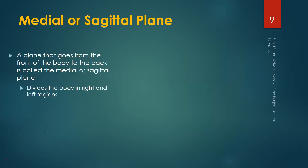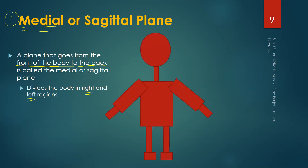The first plane we will discuss is called the medial plane; it has another name, the sagittal plane. Medial is a more meaningful word. A plane that goes from the front of the body to the back is called the medial or sagittal plane, and it divides the body into two parts: right and left. I would encourage you to draw a simple sketch of a human body — including head, neck, arms, trunk, and legs — to understand the concepts we are going to discuss.